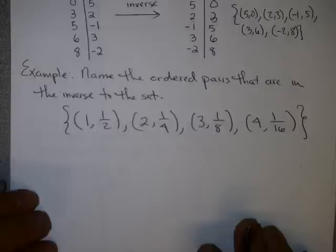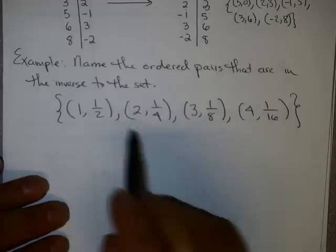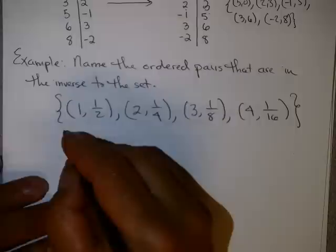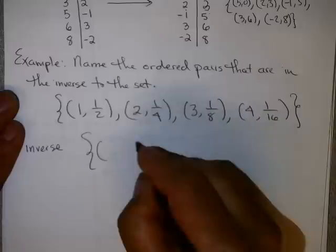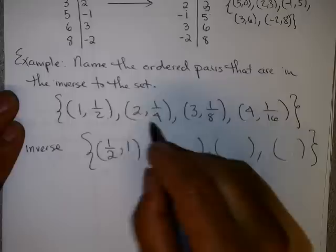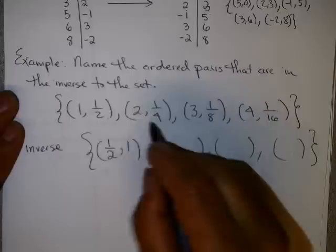It's very easy to do these problems. Here's an example from WebAssign: name the ordered pairs that are in the inverse to this set. Here's a function — you can verify it's a function because each input has only one output. If I want to find the inverse as a set of ordered pairs, all I need to do is switch my inputs and outputs. So instead of (1, 1/2), I have (1/2, 1); instead of (2, 1/4), I have (1/4, 2); instead of (3, 1/8), I have (1/8, 3); and instead of (4, 1/16), I have (1/16, 4).